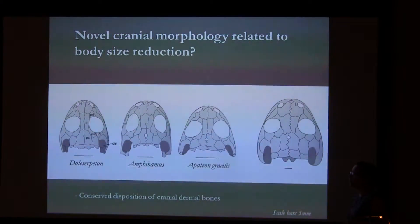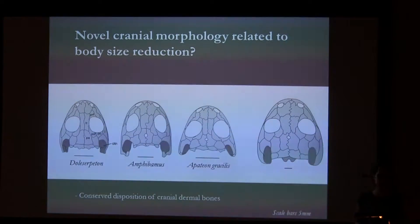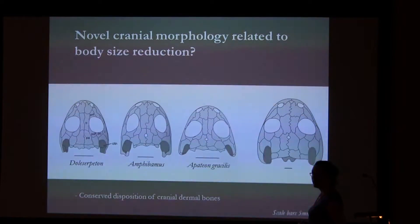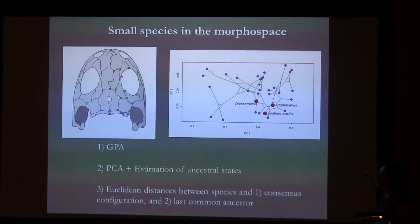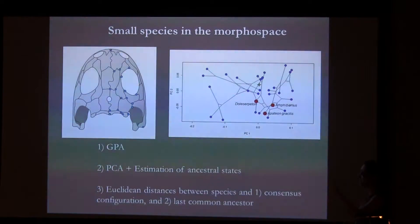Regarding the first question — do they present a novel morphology? — when I refer to the smallest visorophoids, I refer to three species: Doleserpeton, Amphibamus, and Apatheon gracilis. Compared to larger amphibamids, they have a conventional morphology and typical disposition of dermal bones of temnospondyls. To test whether they are outliers in the morphospace of disorophoids, I used geometric morphometric techniques, digitizing 19 landmarks representing skull morphology, then performed a PCA and estimated the shapes of ancestral states.